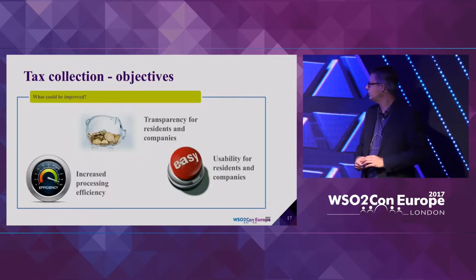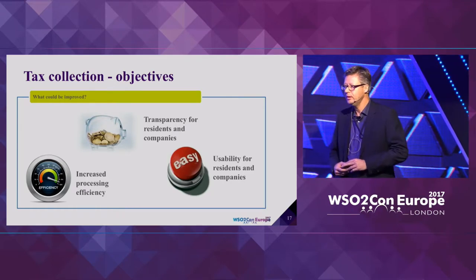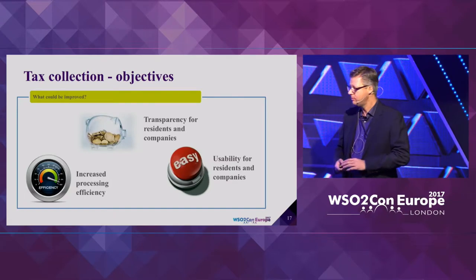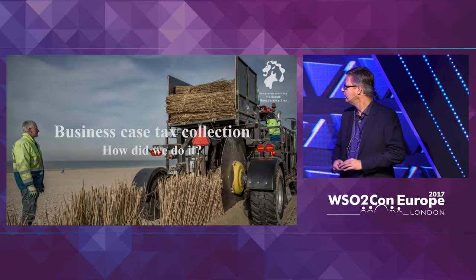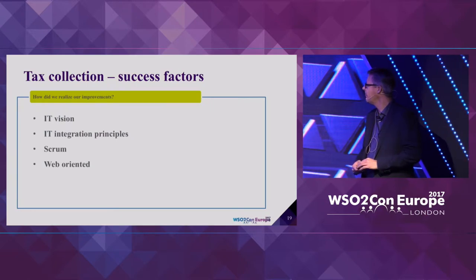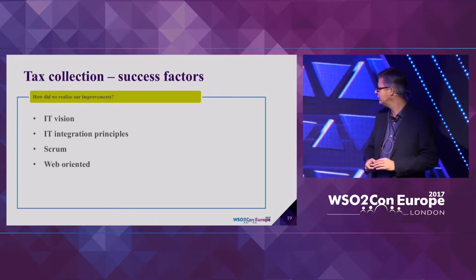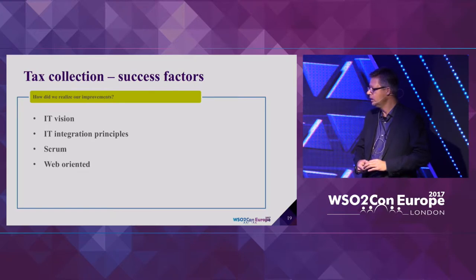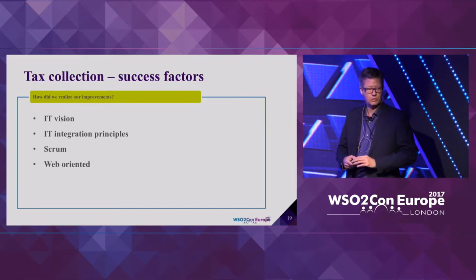We had three objectives. The first was to create transparency for our residents and companies. The second was to create usability — we had a website, but it wasn't as user-friendly as it is now. And within our company, we tried to increase efficiency in our processes. For success factors: we could build on a well-formulated IT vision from the federal government, we used strict IT integration principles, we worked scrum in our integration team using sprints of about three weeks to deliver service integration between applications, and we used a digital front office with a web-oriented approach.